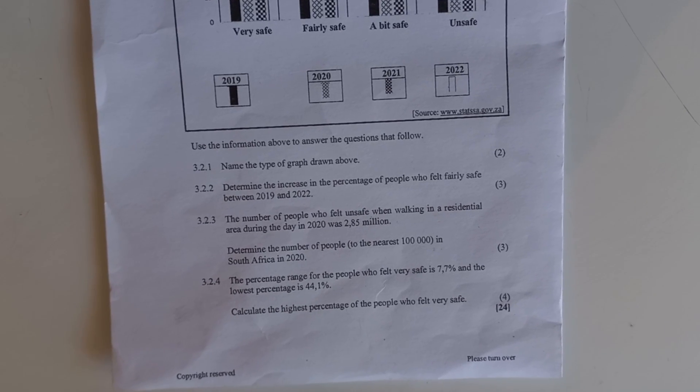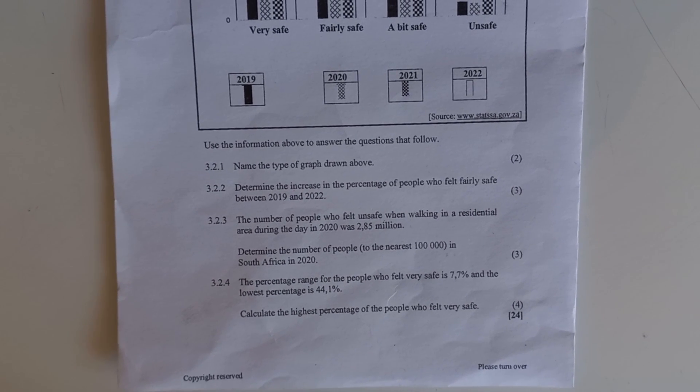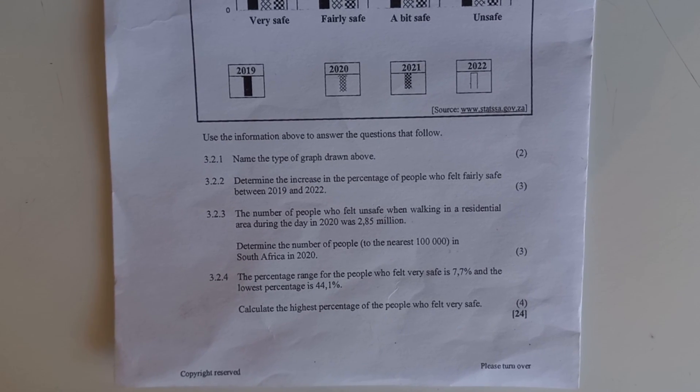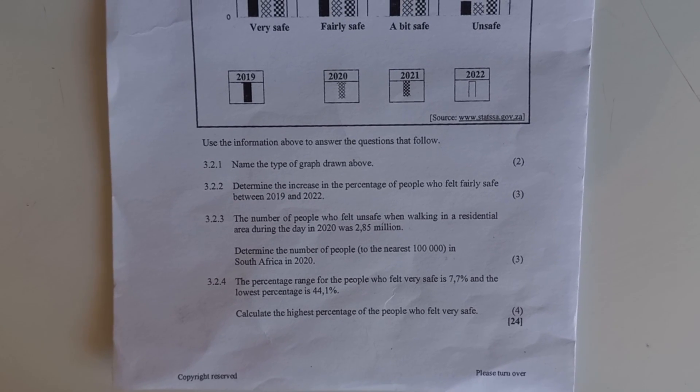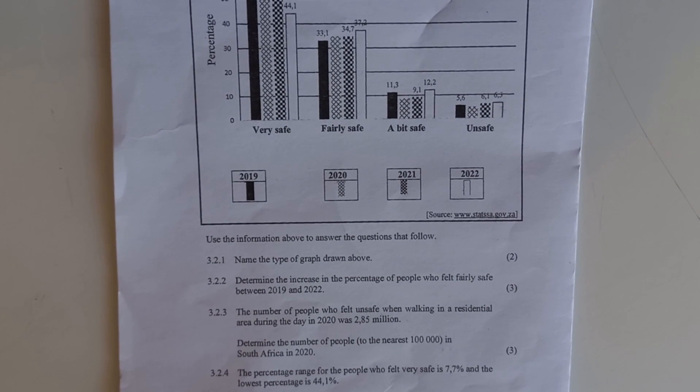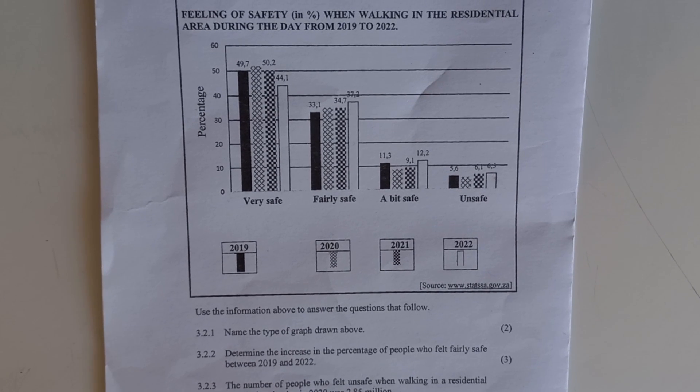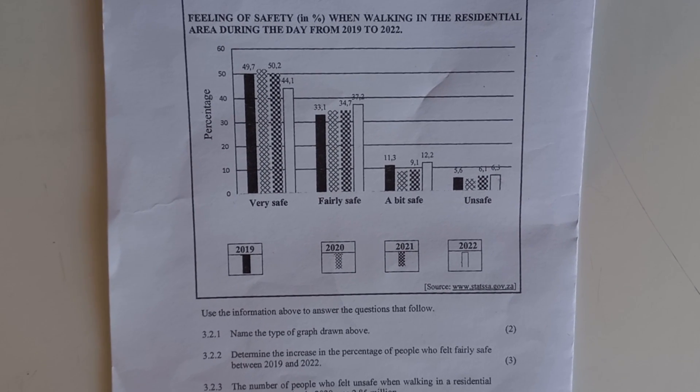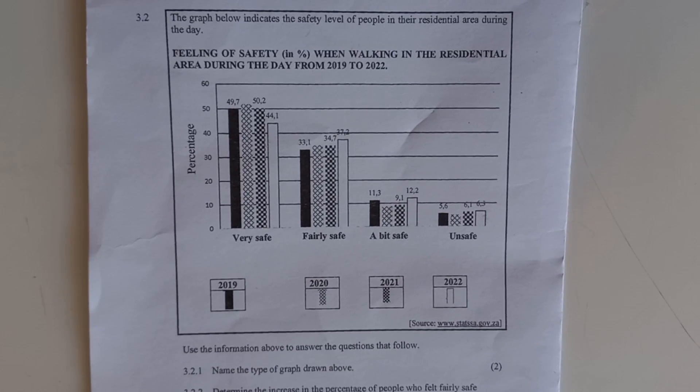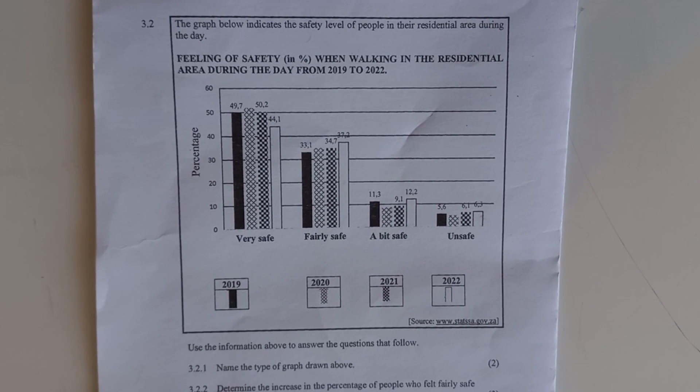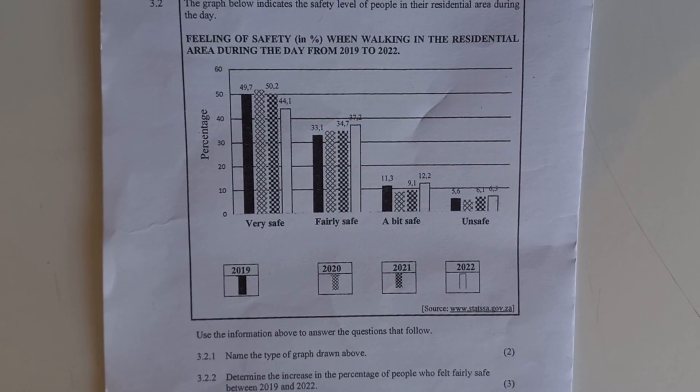The first question: 3.2.1 name the type of graph drawn above. This one is a bar graph but you can see that it's not just one bar graph. You actually have four bar graphs and the bars are upright. Most of the time learners will say it's a stacked bar. It's not. Stacked will be sleeping on top of each other. These ones are compound bar graph.